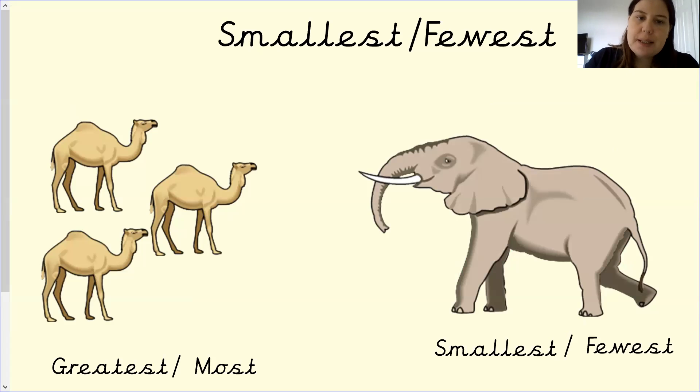So let's look at the camels. One, two, three camels. But how many elephants do we have? Well done. We only have one. So this is the smallest or fewest amount. So if I was to put these in order, I would start with the smallest first.